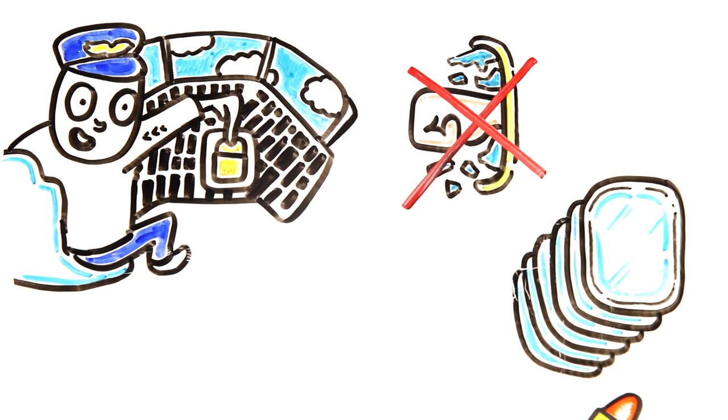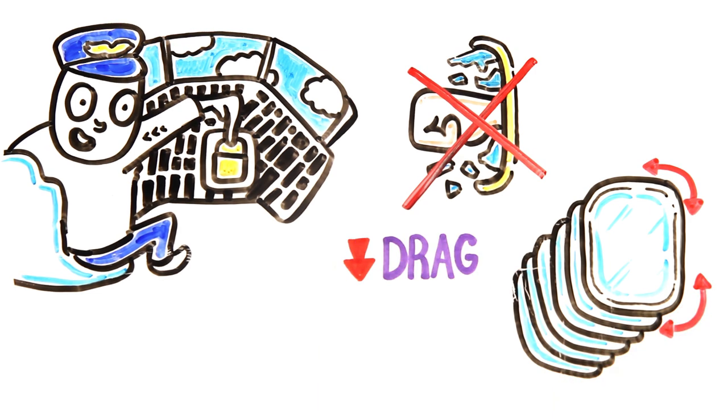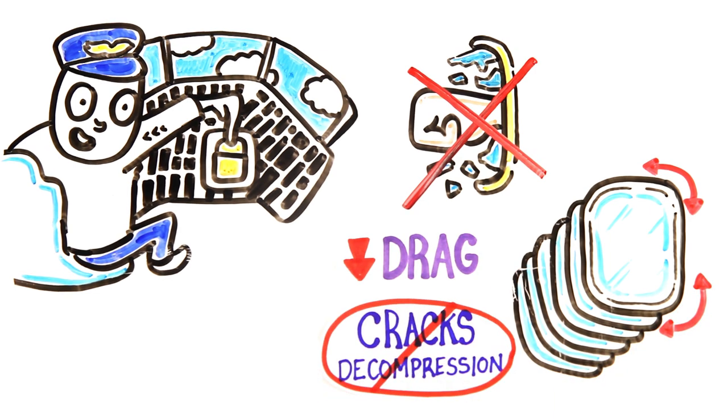Furthermore, these windows are almost always rounded to decrease drag while in flight, thereby preventing cracks and decompression.